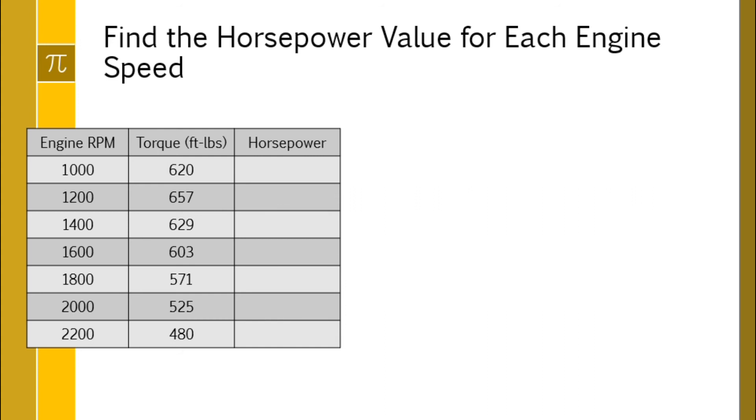So our first one, we know that horsepower is equal to torque, 620, multiplied by the engine speed in RPM divided by the same number, always 5252. If you do that math, you're going to get about 118 horsepower. So that goes here.